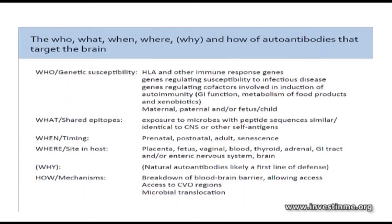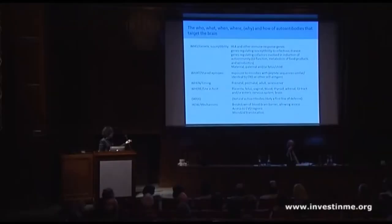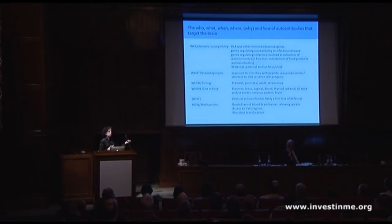Who gets sick? Are there immune response genes, or particular genes relating to infectious disease susceptibility? Are there shared epitopes? What are these self-antigens being attacked by cross-reactive antibodies? When and where the exposure occurs in the host is probably also important. How are these agents getting in? Microbial translocation — we could even have a leaky gut allowing things into the bloodstream that normally wouldn't be there. And perhaps we carry these antibodies because we use some naturally cross-reactive natural autoantibodies as a first line of defense in some circumstances.